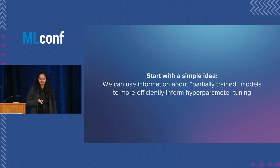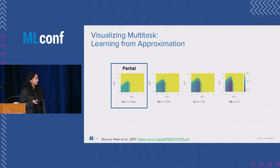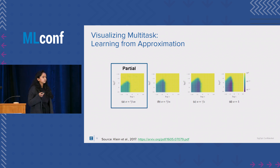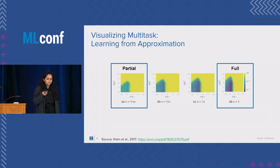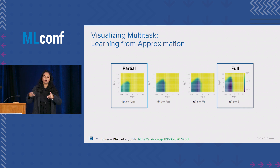Jumping into multitask optimization — the core idea is that partially trained models can give you information about your hyperparameter space for your fully trained models. Looking at this academic example from Klein 2017, Klein uses MNIST and a basic SVM to prove this concept: a partially trained model on MNIST allows us to learn which aspects of the hyperparameter space are important. The fully trained model has the same area of global optima as the partial one, so we leverage learning from smaller tasks to inform our fully trained model.